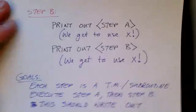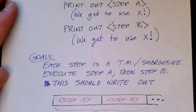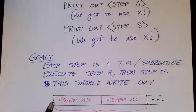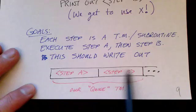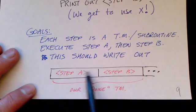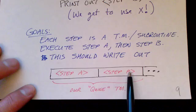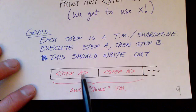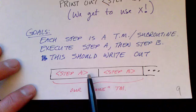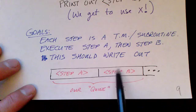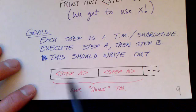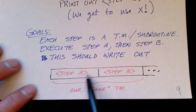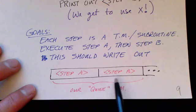Our goal is to leave on the tape a description of step A followed by step B. Each step is a Turing machine in its own right, or we can think of it as a subroutine. The idea is we execute step A and then we execute step B. So what we need to write out is the representation of step A and the representation for step B.